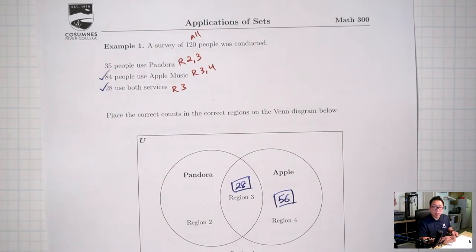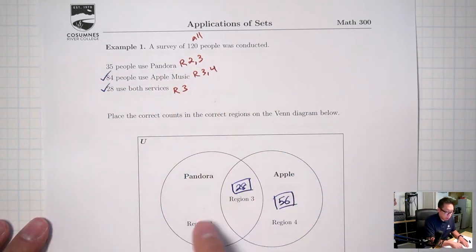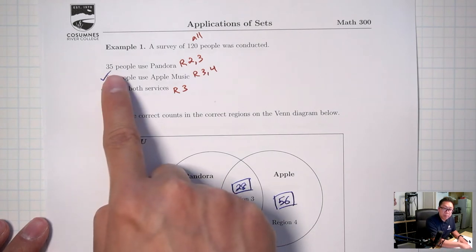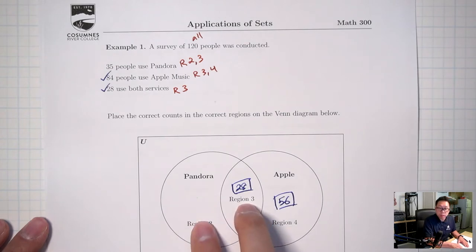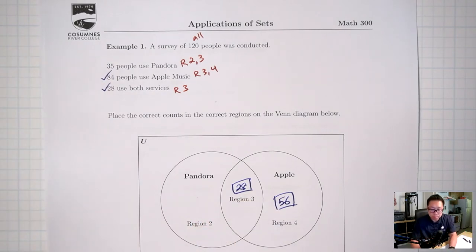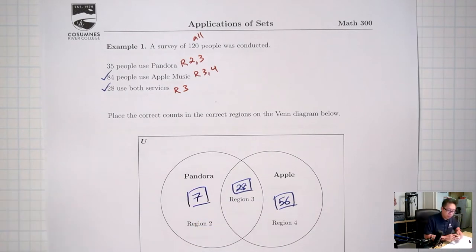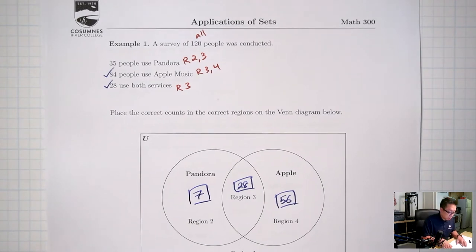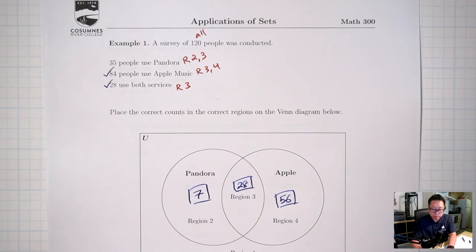Next, 35 is represented by regions 2 and 3 together, so they should add up to 35. The missing number is 35 minus 28, which gives 7. Double checking: 7 plus 28 is 35. So we're good.